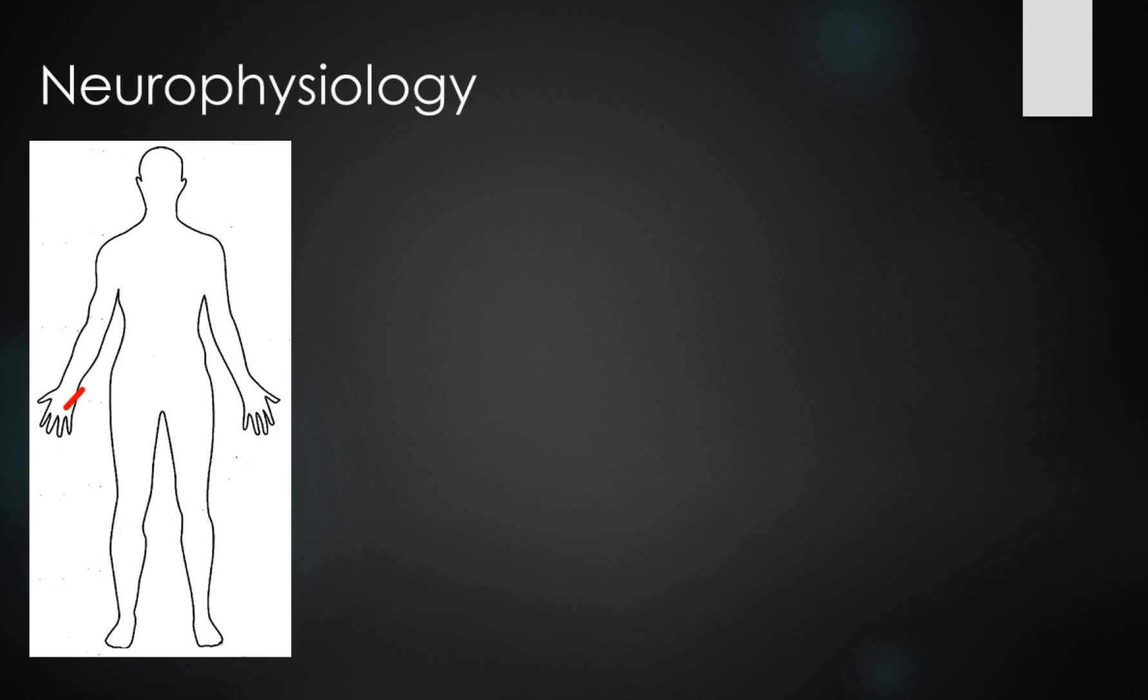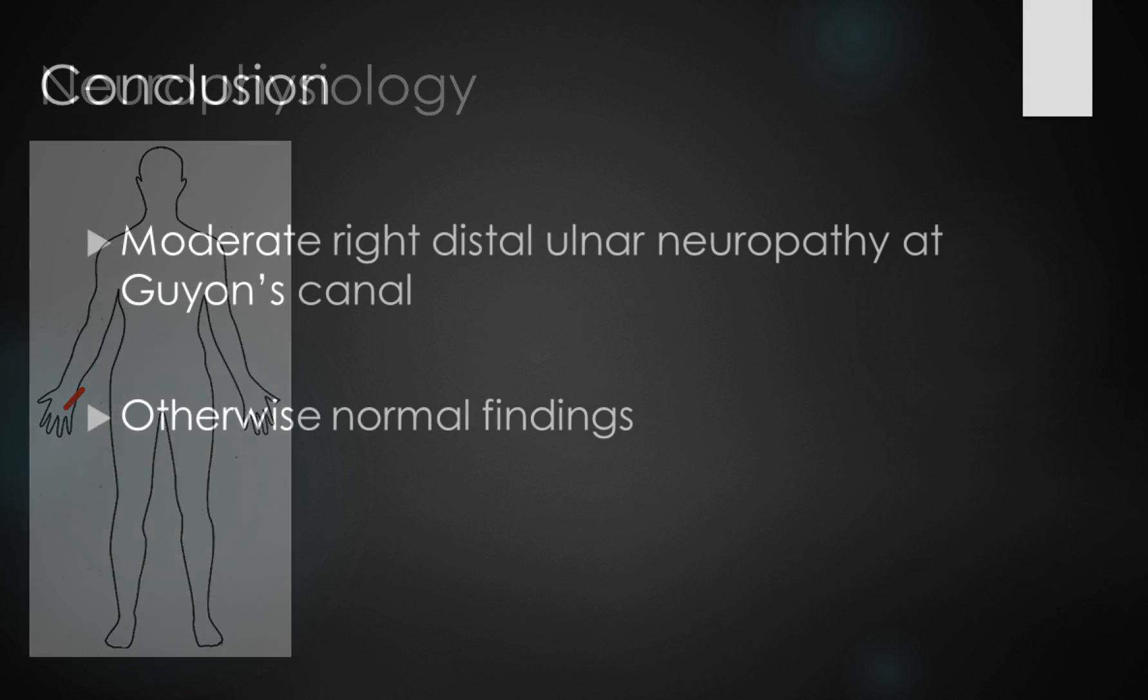So to summarise our findings, we've got reduction of the sensory response on the right-hand side to the ulnar innervated fifth finger. We have sparing of the dorsal ulnar cutaneous branch. We also have delay and reduction in motor amplitude of the ulnar nerve distal segments to the ADM and IDIO muscles, with no effect on the around elbow conduction.